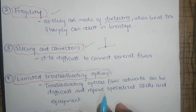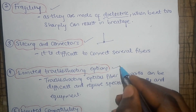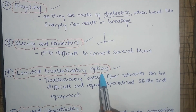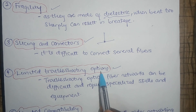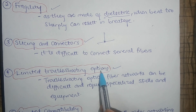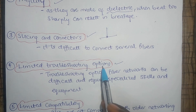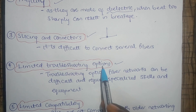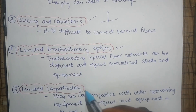The fourth disadvantage is limited troubleshooting options. With traditional networks, there is an established skill set — people are more familiar and know how to solve problems. But for optical fiber, it is relatively new, so options for troubleshooting are not as many compared to the older networking model.